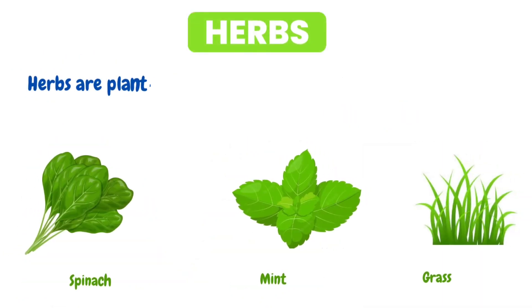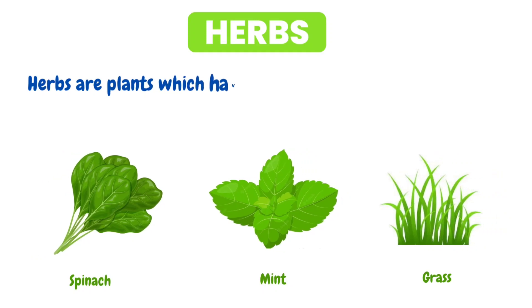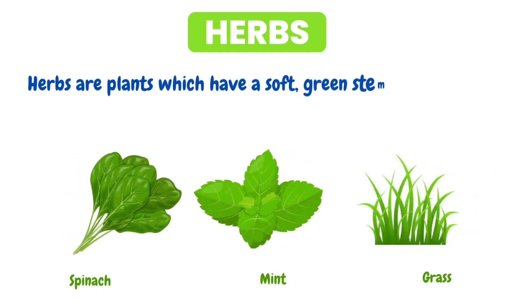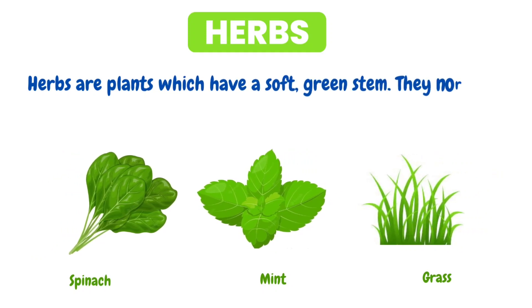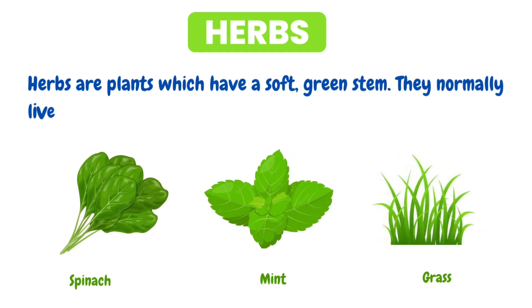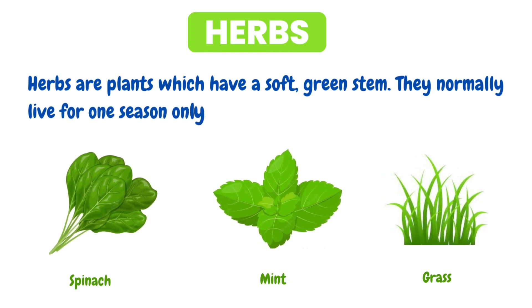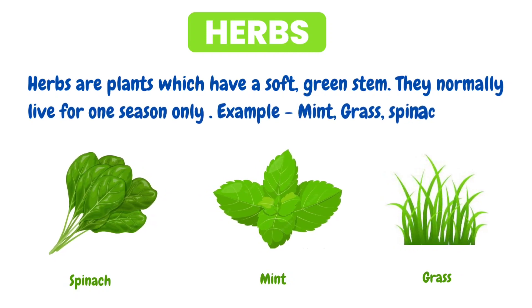Herbs: Herbs are plants which have a soft green stem. They normally live for one season only. Examples: mint, grass, spinach, etc.